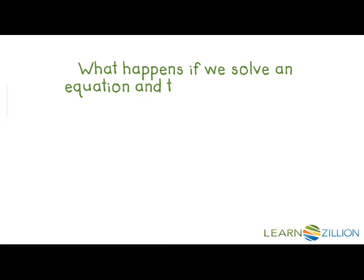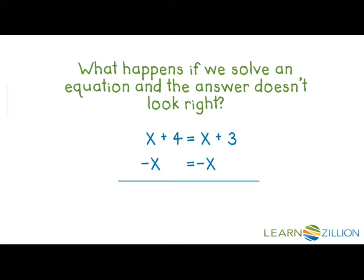What happens if we solve an equation and the answer doesn't look right? Let's solve the equation x plus 4 equals x plus 3. I could subtract x from both sides, and that leaves me with 4 is equal to 3, and no x at all. It looks like we might have a problem here.